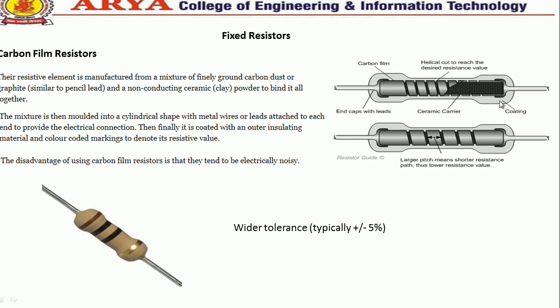The carbon film resistor is finally coated with an outer insulating material, and color coding marking denotes its resistive value. The main disadvantage of carbon film resistors is that they tend to be electrically noisy and have a wider range of tolerance — typically plus or minus five percent.